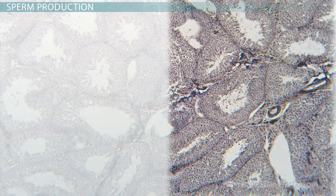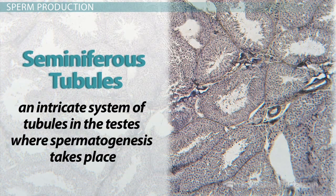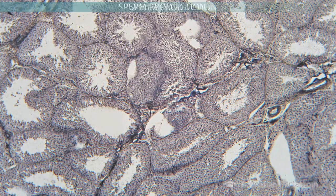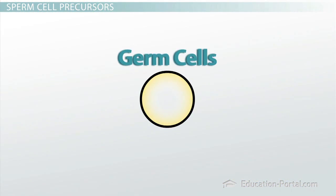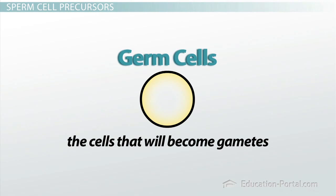In humans, spermatogenesis takes place in the seminiferous tubules, which are an intricate system of tubules in the testes. The seminiferous tubules of an adult human male can sometimes produce over 100 million sperm per day. In order to produce such a huge number of sperm, the tubules contain a very large and active population of dividing, self-sustaining germ cells, which are the cells that will become gametes.